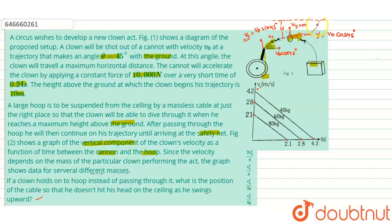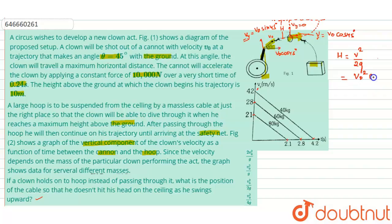At the hoop, the clown has velocity v = v₀·cos45°. If the cable height h is such that the clown only reaches height h and no further, he will not collide with the ceiling. If the velocity is more than that required to reach height h, he will collide. We can find h by: h = v²/2g.